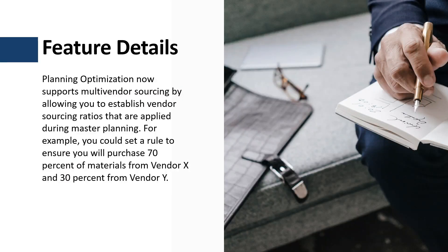Using the multi-sourcing feature, you can divide the supply of a specific product among different vendors by assigning a supply percentage to each of them. After that, the application can automatically suggest a vendor for the generated planned orders according to that policy.